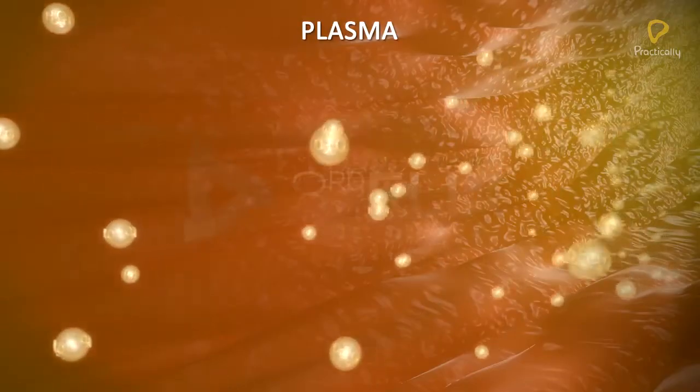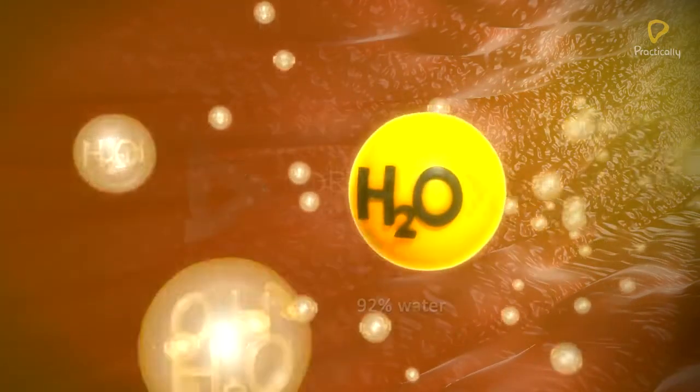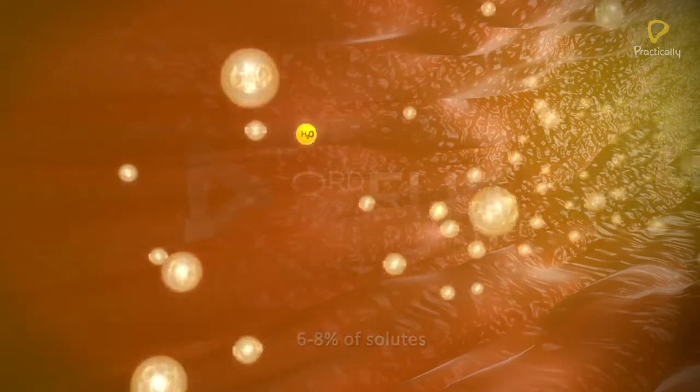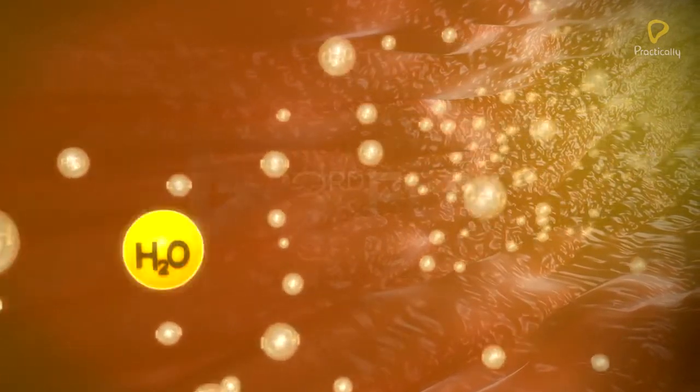Plasma is the fluid matrix of the blood. It consists of about 92% water and 6-8% of solutes, some of which are diffusible and some non-diffusible.